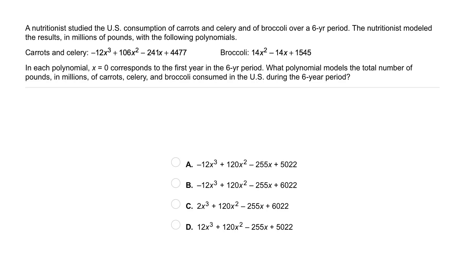Your turn: a nutritionist studied the US consumption of carrots and celery and broccoli over a six-year period. The nutritionist modeled the results in millions of pounds with the following polynomials. First, carrots and celery modeled by the polynomial negative 12x cubed plus 106x squared minus 241x plus 4,477.